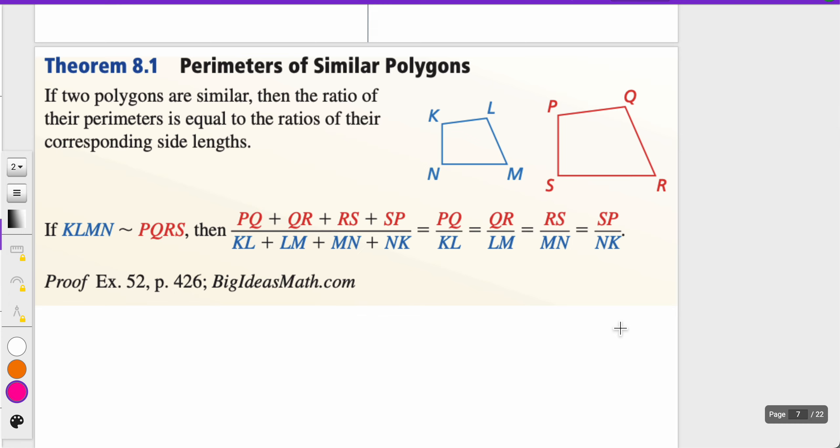We're going to switch to our perimeter of similar polygons theorem. This is going to be on your worksheet. If two polygons are similar, then the ratio of their perimeters is equal to the ratio of their corresponding side lengths. Remember, we find perimeter just by adding up all the outer edges, and those ratios will remain the same.